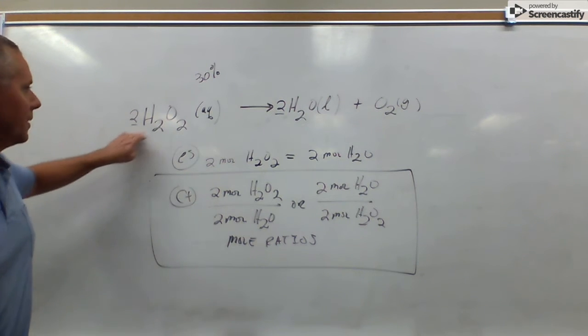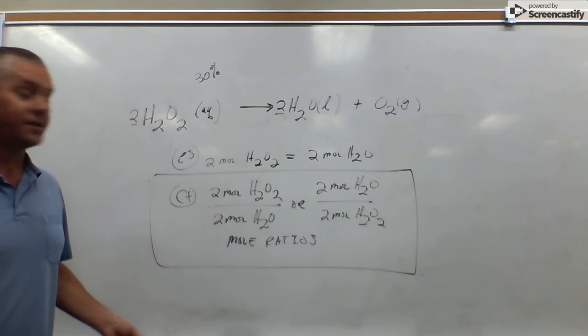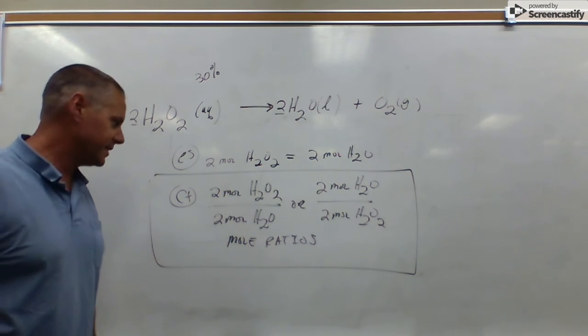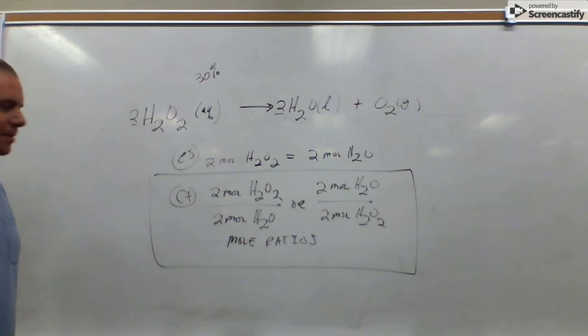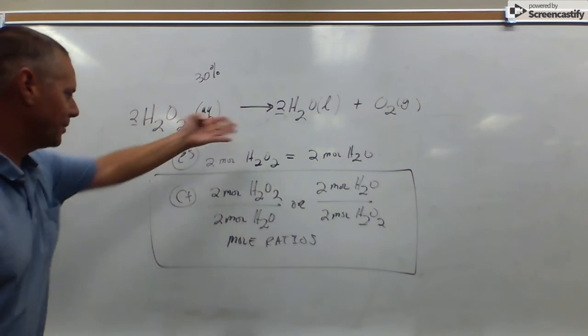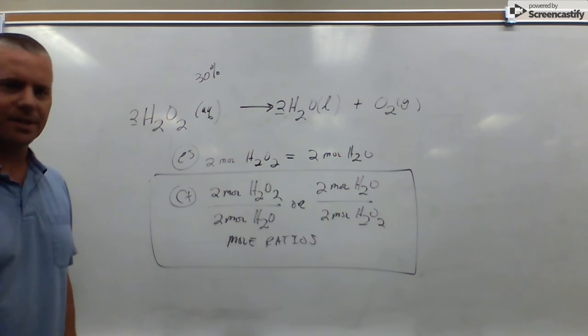And these 2's came from the balancing coefficients. Does it reduce to 1 over 1? Yes, it does. But these are the facts that come from the reaction. If you multiply something by 2 and divide by 2, it is obviously the same as multiplying by 1.